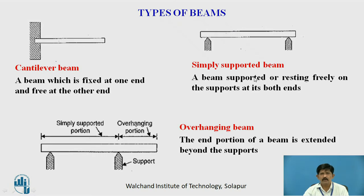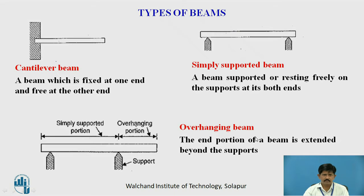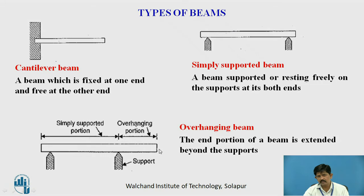A simply supported beam is a beam which is simply resting freely on the supports at both its ends. Here you can observe two supports and the beam is simply resting on them. An overhanging beam is one where the end portion is extended beyond the support. The overhang portion may be large or small.